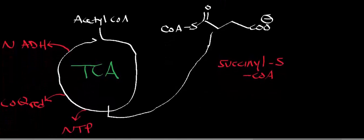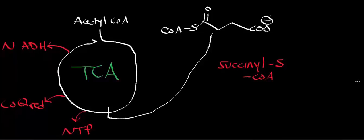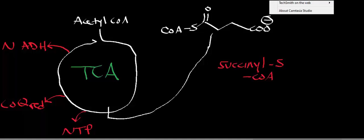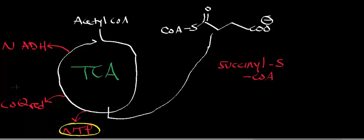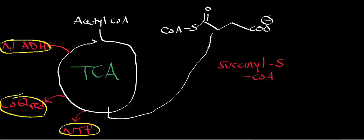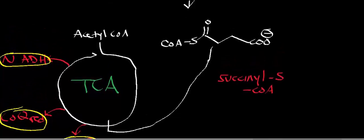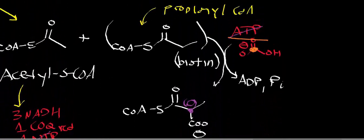Succinyl-CoA enters the TCA cycle, completing the last half of it. In the process, we generate one nucleoside triphosphate, one reduced CoQ from FADH2, and one NADH. It's now time to count our total yield.